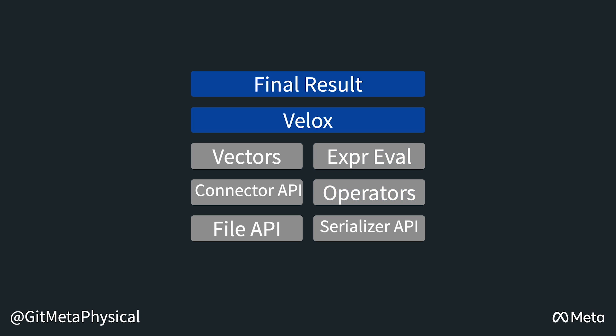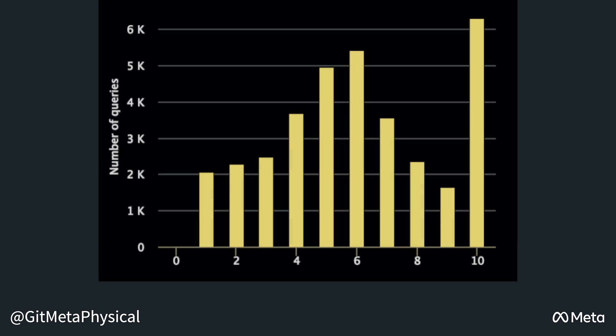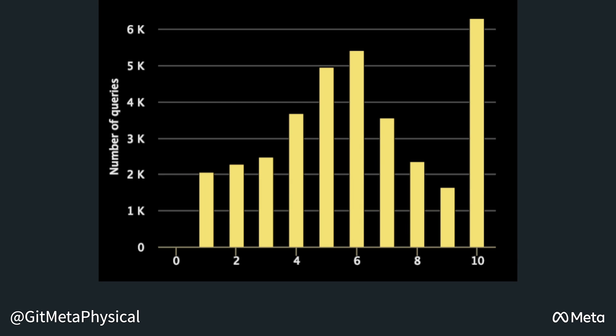VLOX has been shown in experiments to have performance improvements ranging from two to ten times faster completion compared to Presto's Java workers. We are also integrating VLOX with Spark, machine learning pre-processing workflows for training and serving, stream processing systems, as well as data warehouse ingestion pipelines.